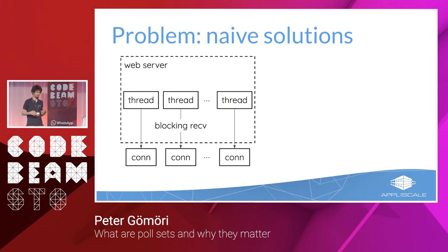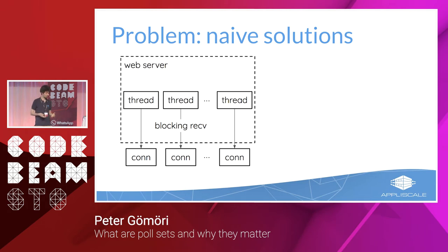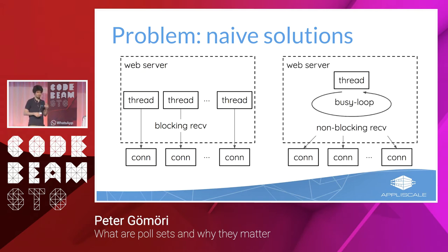The problem itself is: let's say we want to write a server which has a lot of network connections and wants to react to incoming data on any of them as fast as possible. Assume we want to write a web server in C. We can have as many threads as connections — one thread per connection, each waiting in a blocking receive. But the problem is that thousands of OS threads require a lot of memory and put pressure on OS kernel scheduling. Another approach: one thread busy-looping over all connections calling a non-blocking receive on each — but most of the time it returns nothing, so that's a waste of CPU.